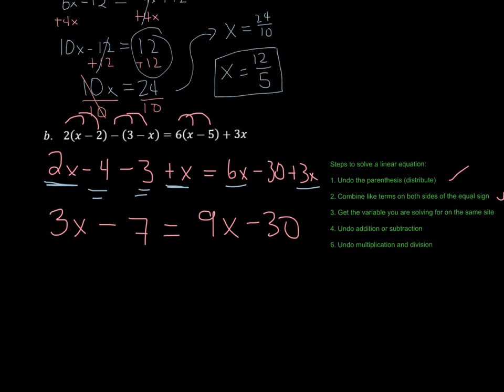We need to get the variable we're solving for on the same side. Again, we're trying to solve for x here. So I always move from the right over to the left. If you want to move the 3x over, you'll still get the same answer. But I'm going to get rid of this 9x. So it's a positive 9x. I subtract 9x from both sides. And we're going to get 3 minus 9 is going to give us negative 6x minus 7 equals negative 30.